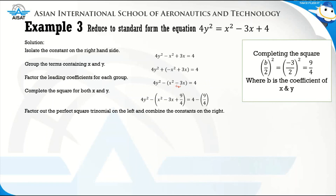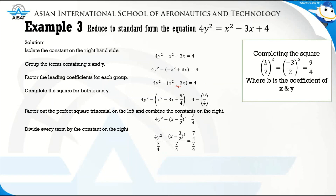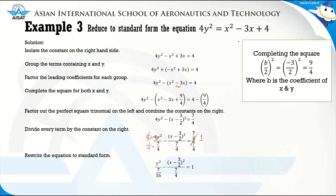Factor the perfect square trinomial and combine constants: 4y² minus (x minus 3/2)² equals 7/4. Divide every term by 7/4. To eliminate the coefficient 4 on y², multiply the numerator and denominator by 1/4. This simplifies to: y² over (7/16) minus (x minus 3/2)² over (7/4) equals 1. That is the standard form of the hyperbola for example three.